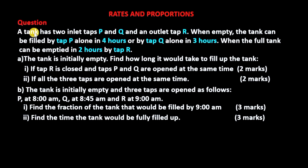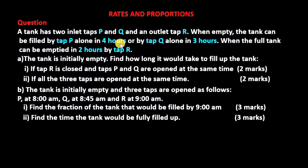The question reads: a tank has two inlet taps P and Q and an outlet tap R. When empty, the tank can be filled by tap P alone in four hours, or by tap Q alone in three hours. When full, the tank can be emptied in two hours by tap R.